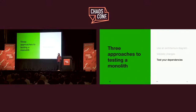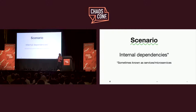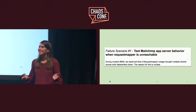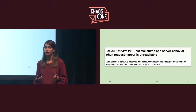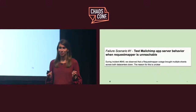A final approach I'd like to talk about is testing dependencies. Internal dependencies is kind of cheating because this talk is supposed to be about a monolith — but hear me out. Just because you have a monolithic application doesn't mean that your application isn't talking to other applications internally. And failing to identify those dependencies can have really negative consequences, like an incident. This incident happened when an application that had been historically resilient and wasn't well known to many engineers became unavailable.